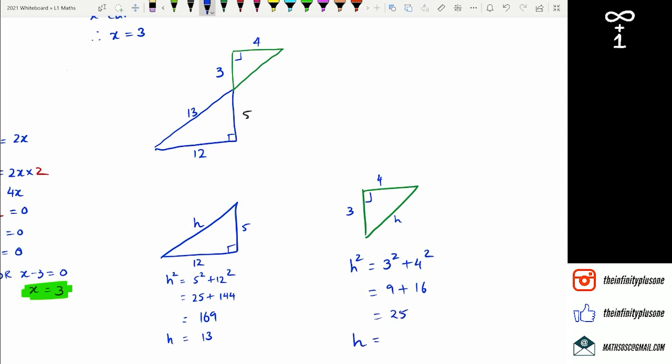So h equals square root of 25, which equals 5. I realize I just forgot that step there. h equals square root of 169, and then h equals 13. So going back to our diagram, we've got h equals 5.